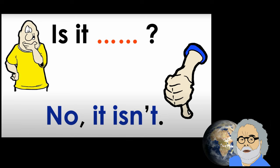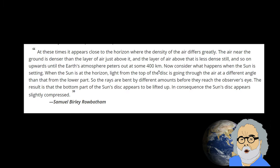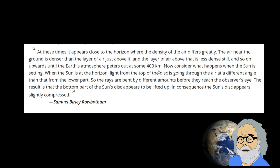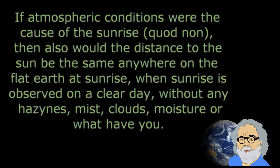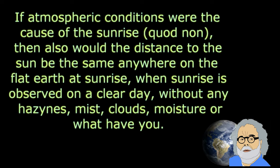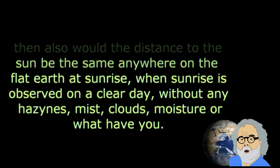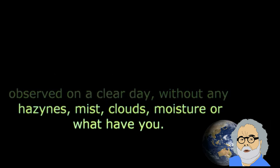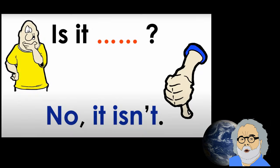Some flat earthers claim that you can see only so far due to atmospheric conditions - looking through an ever-thickening layer of air gradually obstructs your view until you cannot see anything anymore. The same line of reasoning as for perspective goes for the atmospheric conditions argument. If those were the cause of the sunrise, then also would the distance to the sun be the same anywhere on the flat earth at sunrise, when sunrise is observed on a clear day without any haziness, mist, clouds, moisture or what have you. And it isn't.